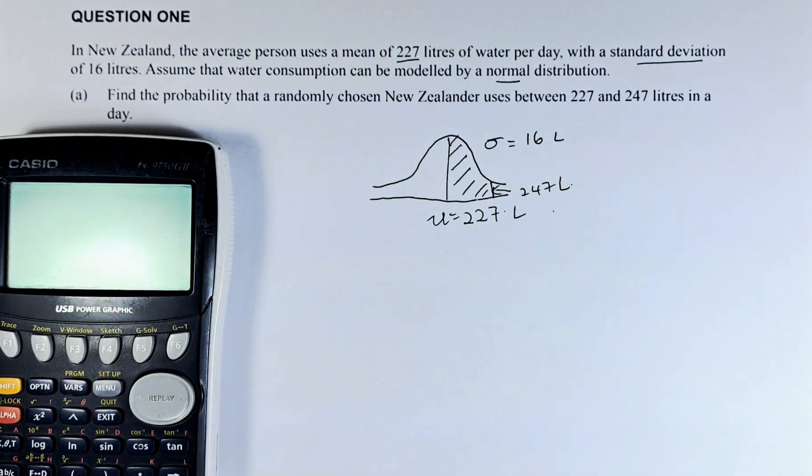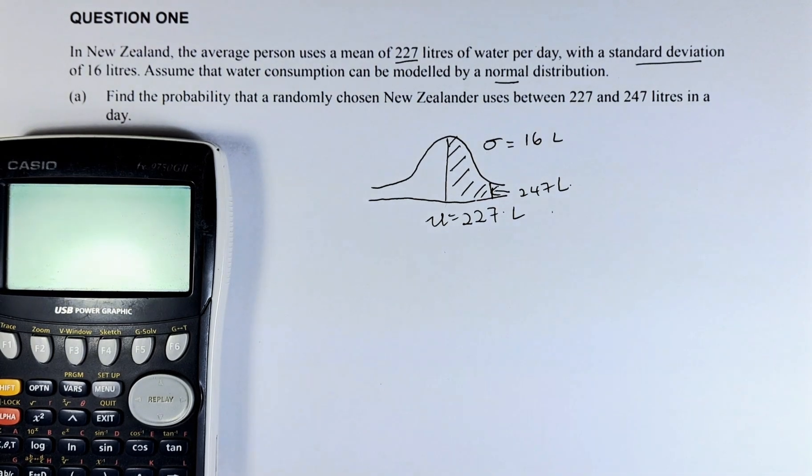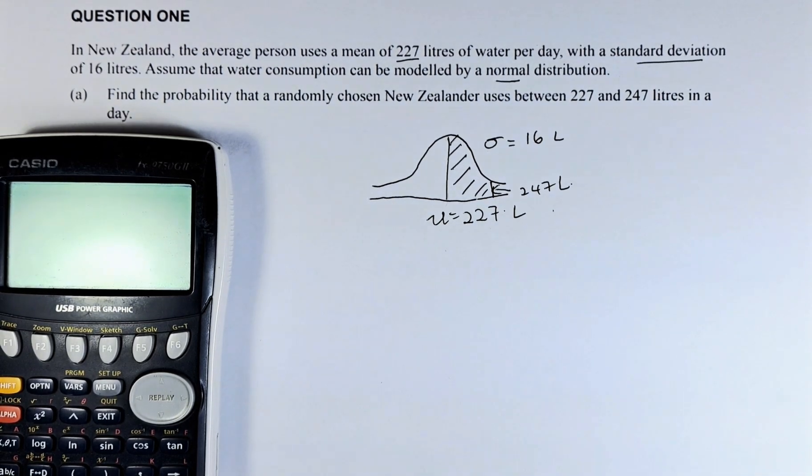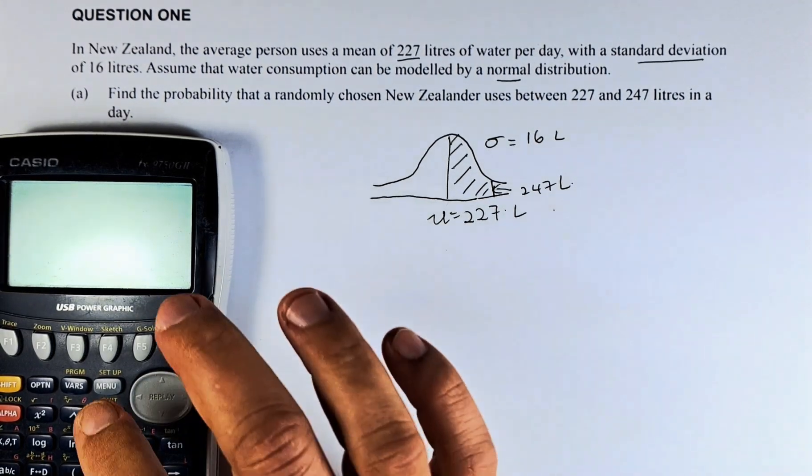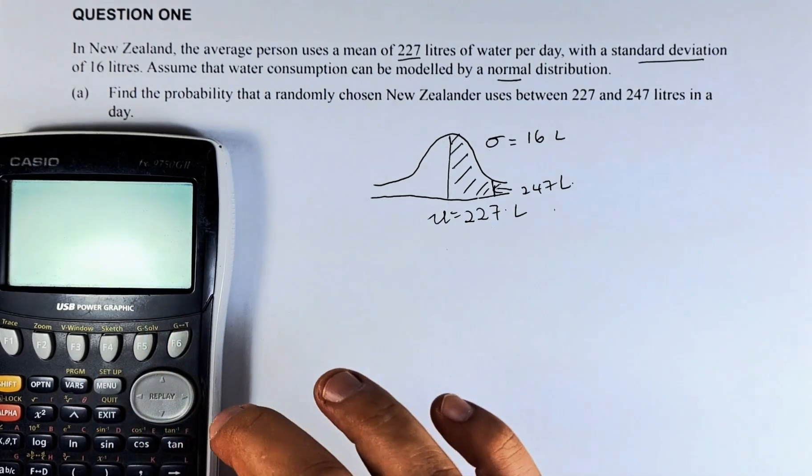Of course, you can use a table to do this, but because of time constraints, we are going to use the graphic calculator. So what we are going to do is turn on the calculator. We switch it on.